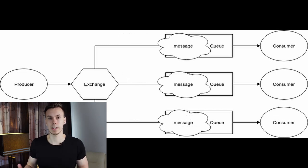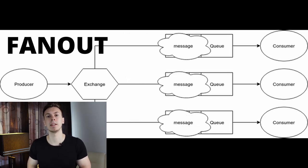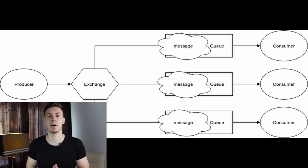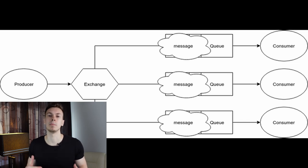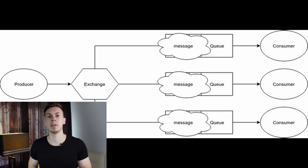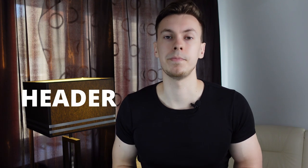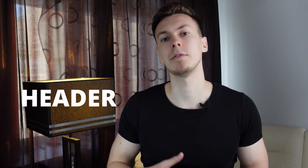Another exchange type is fanout. A fanout exchange sends messages to all queues it knows about — routing keys and binding keys don't matter. If a queue is bound to the exchange, it will receive the message. The last exchange type is header exchange, which allows routing based on header values instead of routing keys. It works pretty much the same as the previous exchange types, so I won't go into the details here.